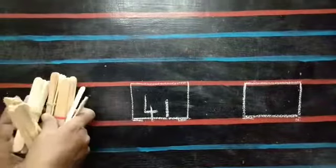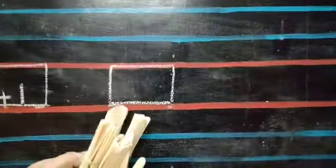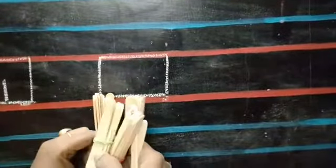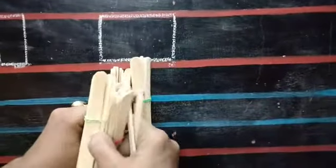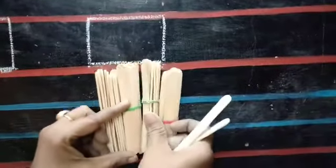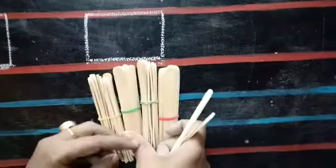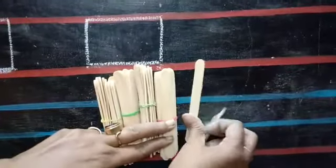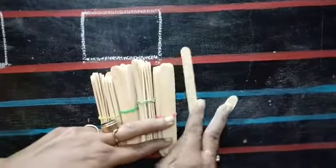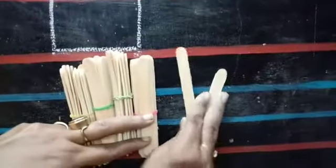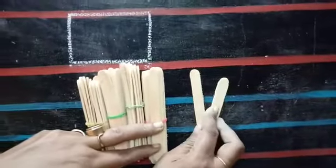And look at this box children. 10, 20, 30, 40. 4 bundles are there and 2 extra sticks. 2 extra sticks are there. 42.